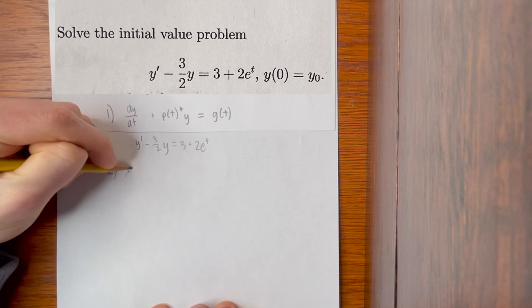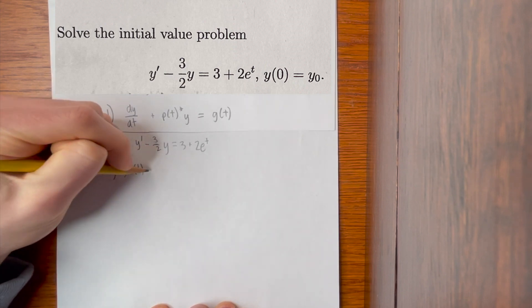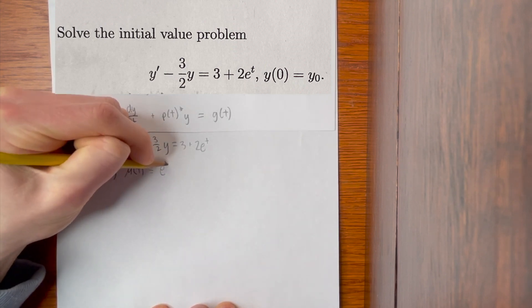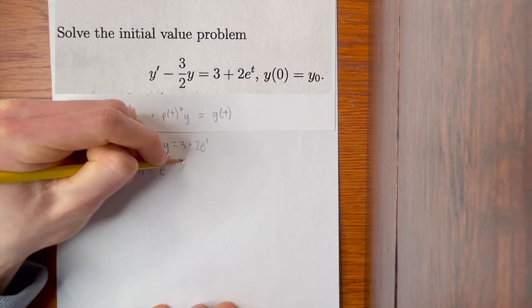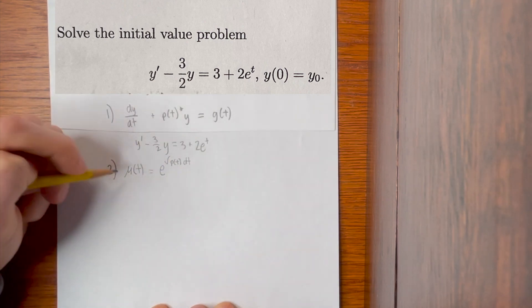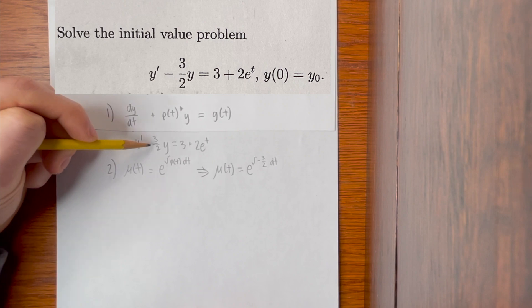Now, the integrating factor μ(t) is equal to e to the power of the integral of p(t) dt. We simply have to memorize this. In this case, our p(t) is -3/2.